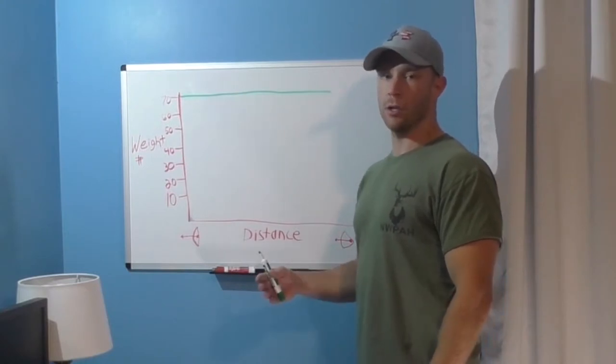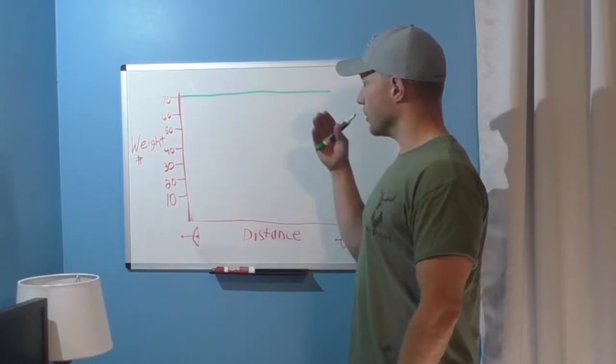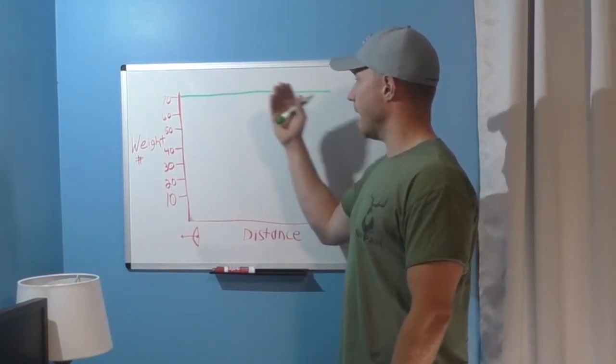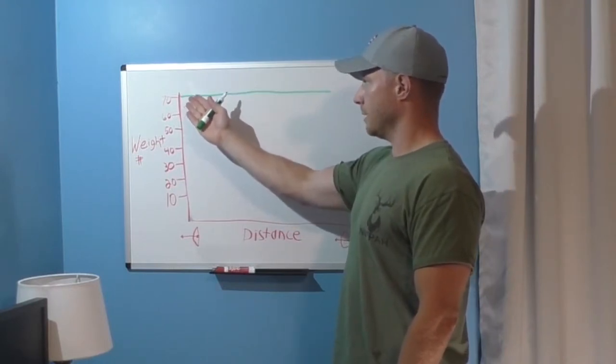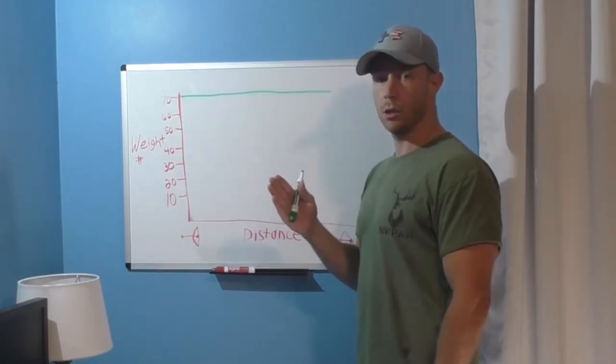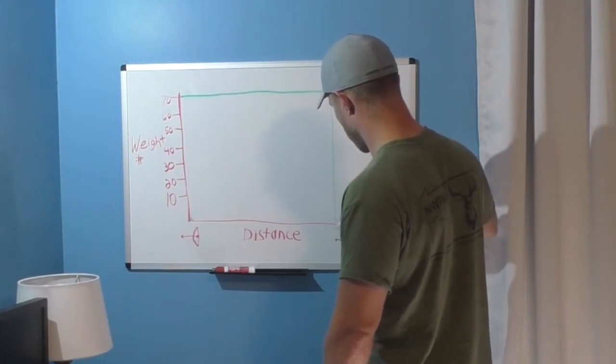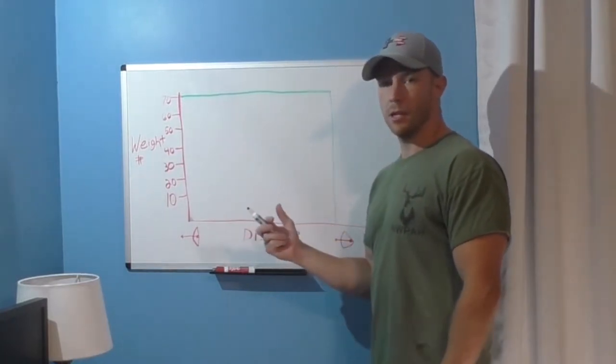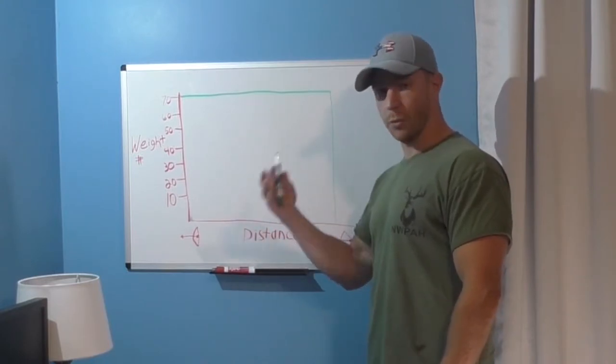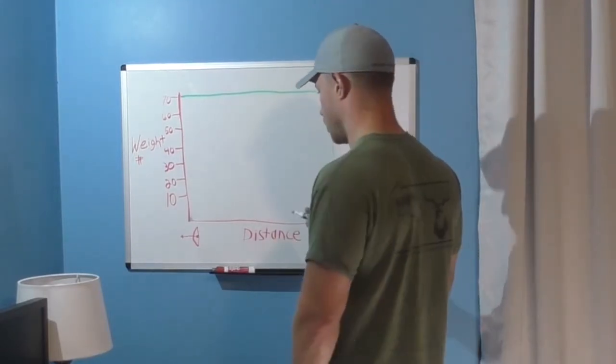So how do we use this chart to understand the energy that's being stored in the limbs? Now for this particular example, while this isn't possible, we're pretending we have a bow that pulls the peak weight from when you first begin to pull it until it hits the back wall. Now to calculate the area under this curve, we first have to know this distance. So we'll say this is a 30 inch draw that has about a six inch riser so it's probably a speed bow. That gives us then about 24 inches or two feet.